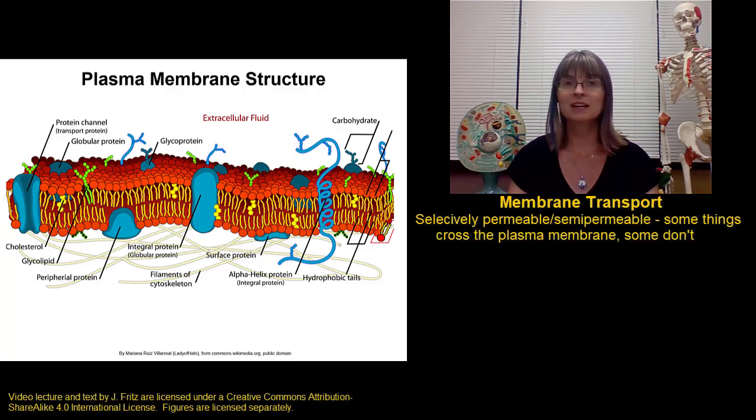We say that the plasma membrane of a cell is selectively permeable or semi-permeable. Those two words mean pretty much the same thing, that some things can get in and out across the plasma membrane and other things can't.